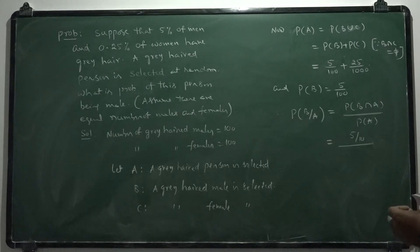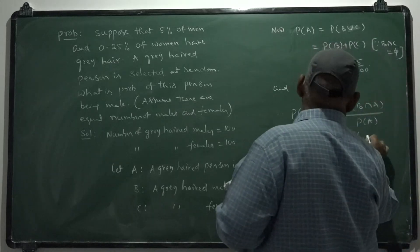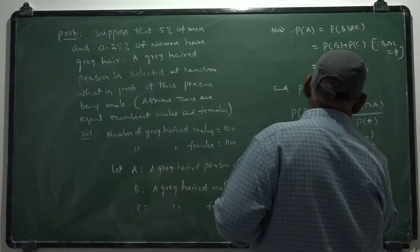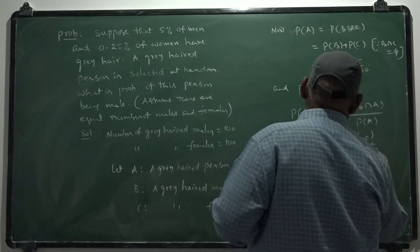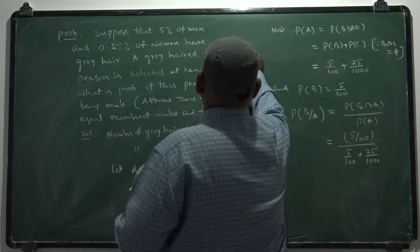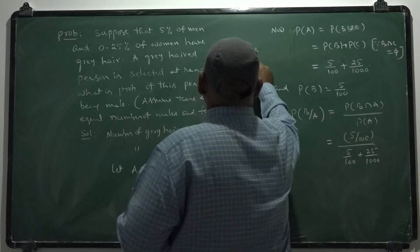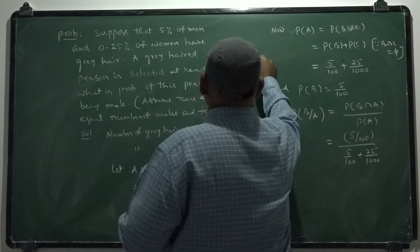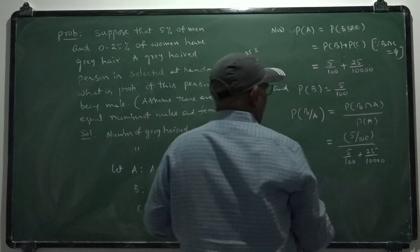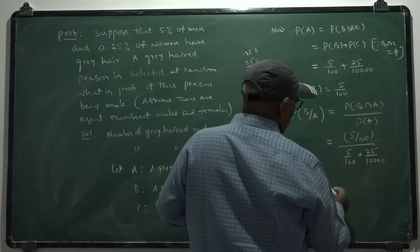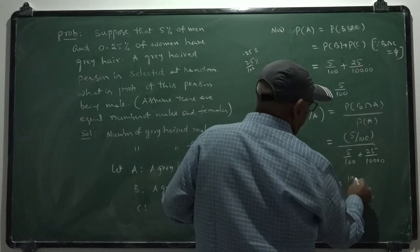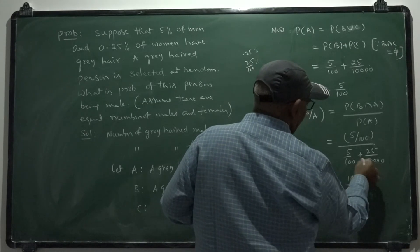5 percent means 5 by 100. Divided by probability of A, which is 5 by 100 plus 25 by 10000. So 0.25 percent is 25 by 10000, which requires one more zero.